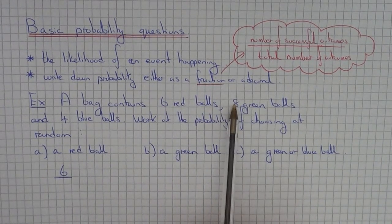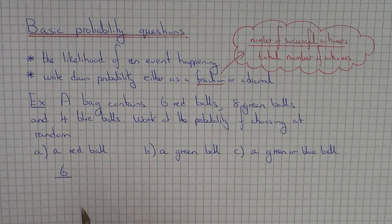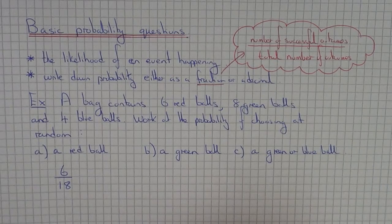So 6 add 8 is 14, add 4 is 18. So the probability of choosing a red ball would be 6/18.